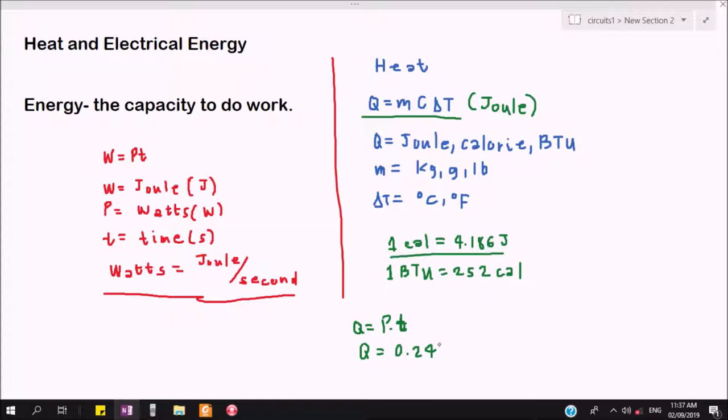That is the relationship; that's why we have the 0.24. We have P times T.